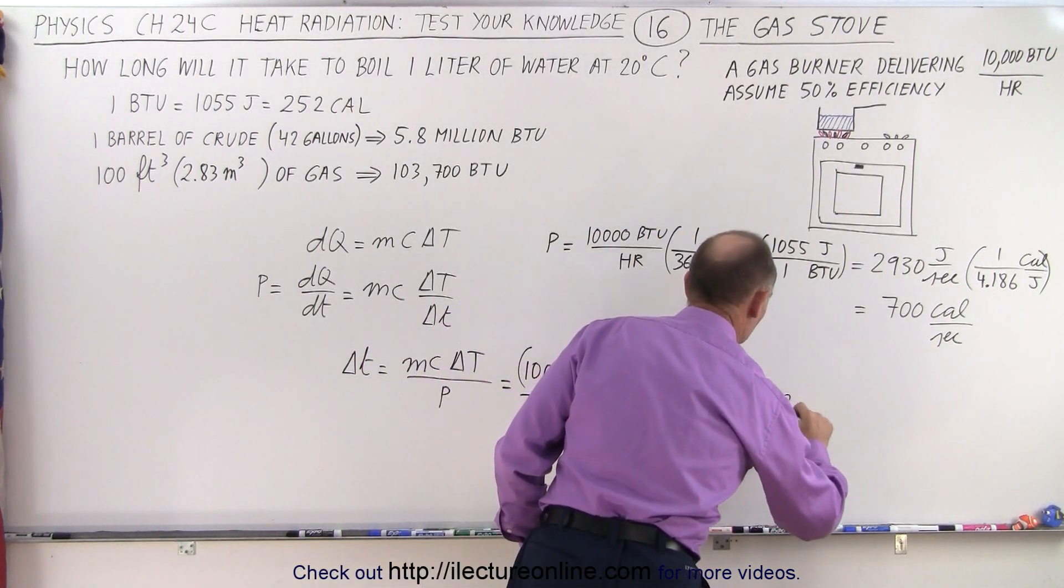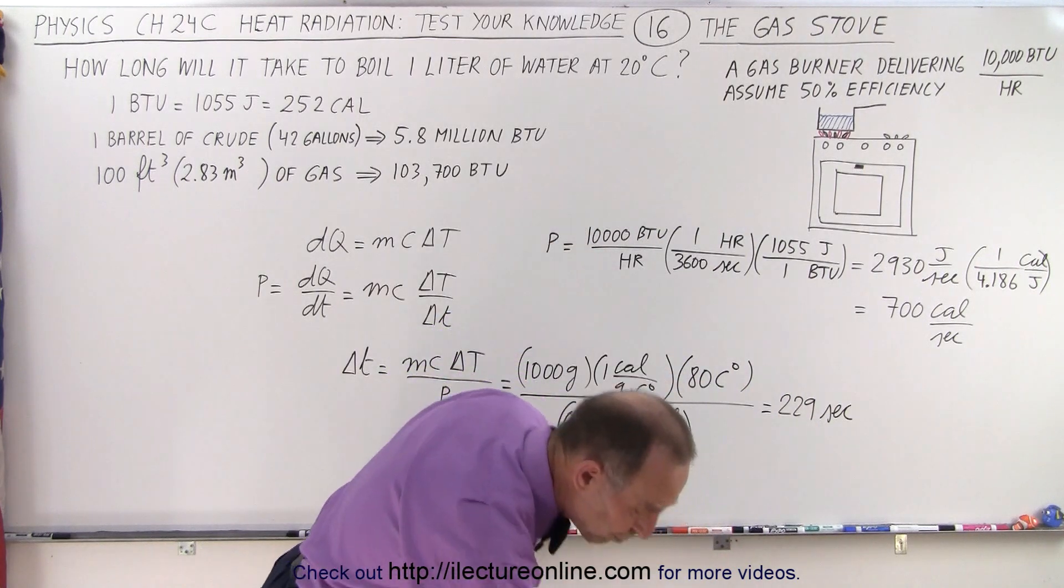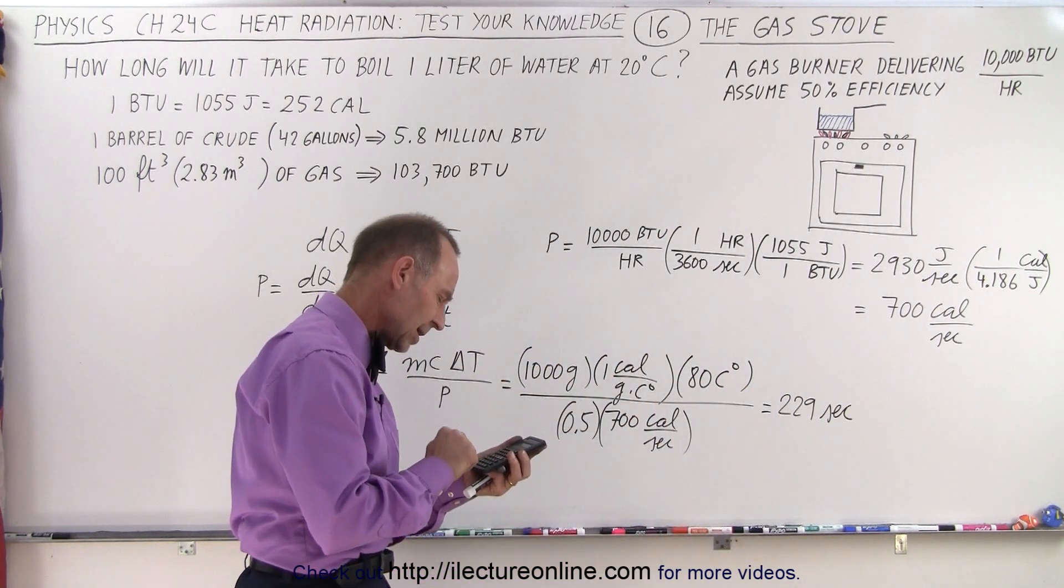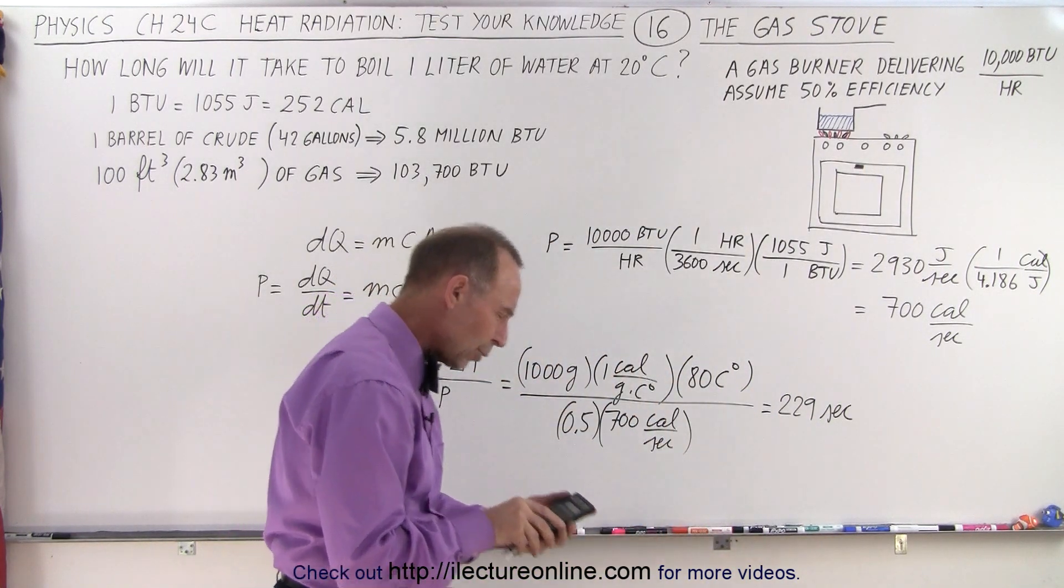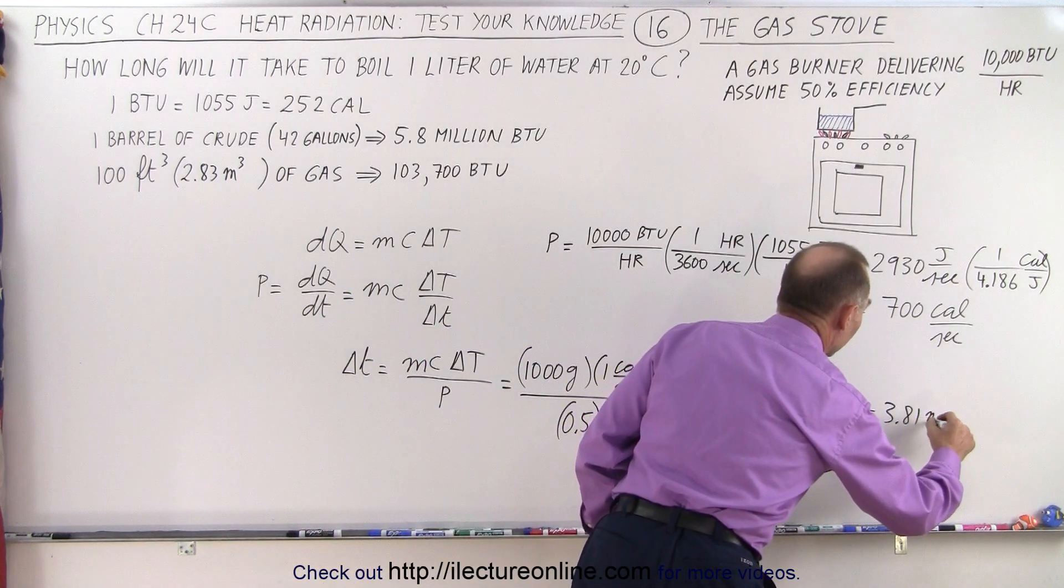1,000 grams times 80 divided by 0.5 divided by 700 equals 229 seconds. That's equal to 229 seconds. And if we convert that to minutes, divide by 60, that gives us 3.81 minutes.